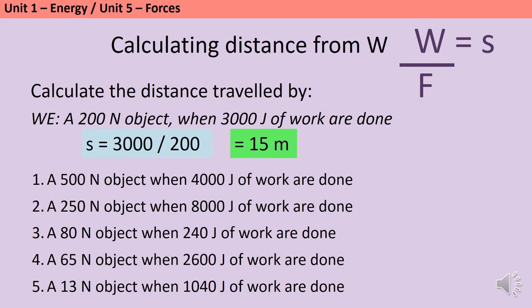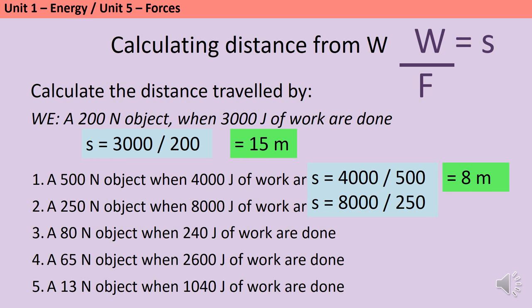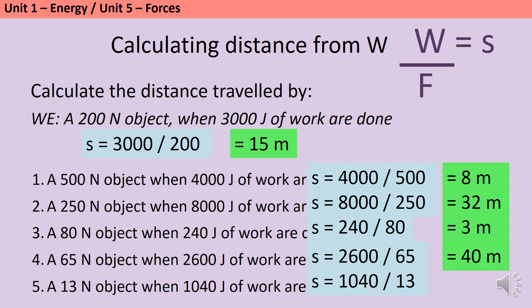Here are five quick questions for you to have a go at, so pause the video and write down some answers. When 4,000 joules of work are done on a 500 newton object, we do 4,000 divided by 500 to get a distance of 8 meters. Then a 250 newton object with 8,000 joules of work being done on it will move 32 meters, our 80 newton object will move 3 meters, the 65 newton object will move 40 meters, and the 30 newton object will move 80 meters.